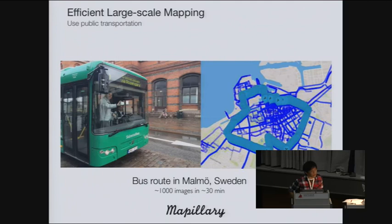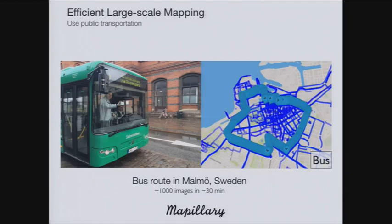To make the capturing process as efficient as possible, here's one example: in Malmö, Sweden, we got on a bus, put the phone near the window, and stayed on the bus for half an hour. That produced 1,000 images in approximately 30 minutes. You can see the sequence of images on the right — it covers a route going around the city.